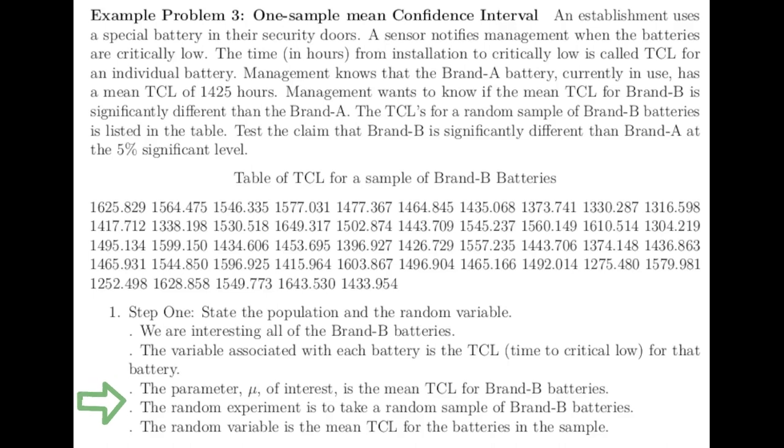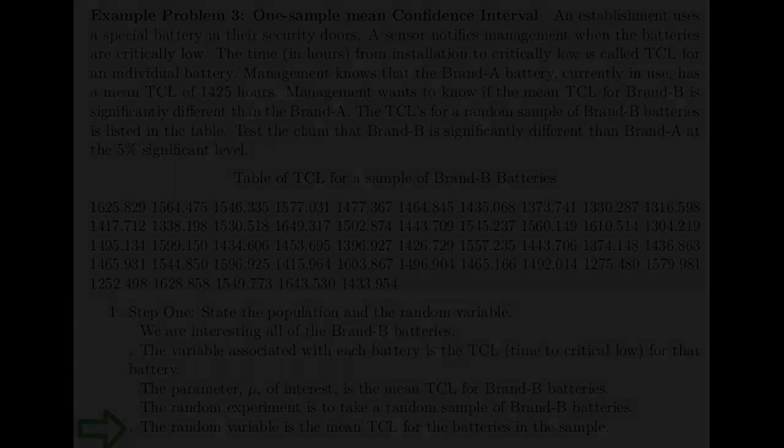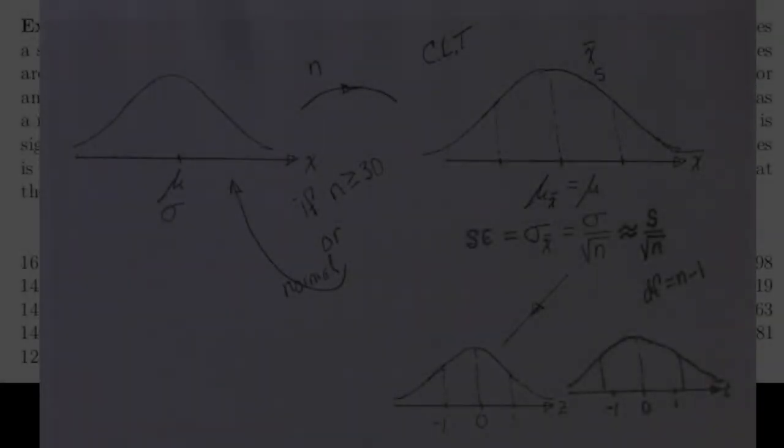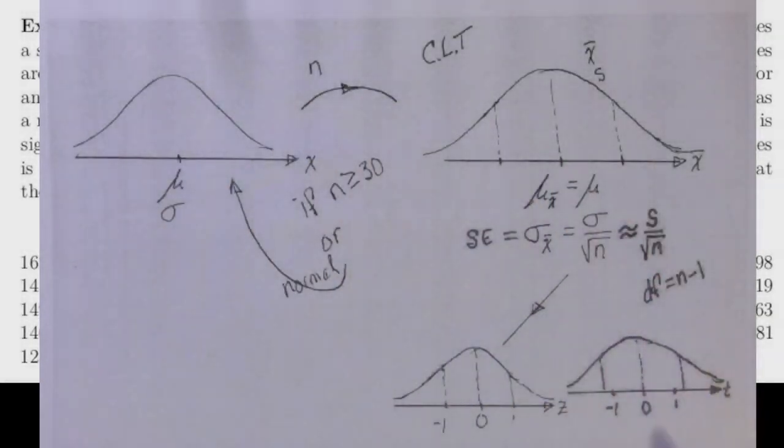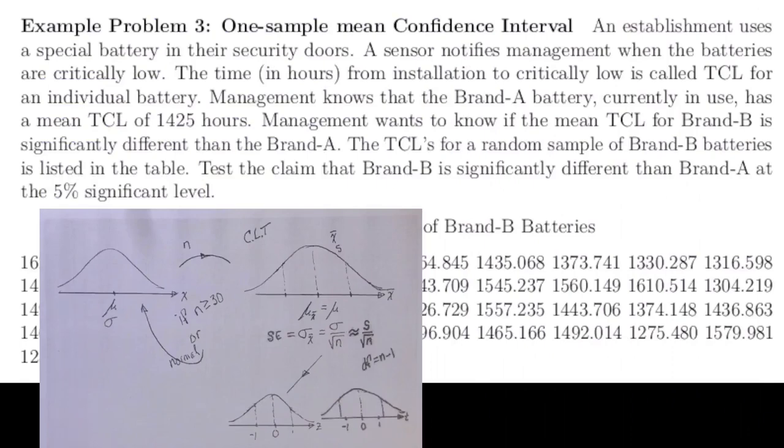The random experiment that we're going to do is take a random sample. We're going to consider all of those possible random samples of that particular size and the random variable that results from those random samples is what the mean TCL is for the batteries in the sample. A previous video developed the idea of a three-distribution diagram for one-sample means. We'll use that to solve this problem about one-sample means hypothesis test.